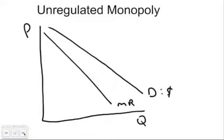In a monopoly, you have a downward sloping demand curve, which is the same as the price, and you have the marginal revenue curve below it. In perfect competition, we had Mr. DARP, so marginal revenue was the demand curve. But in monopoly, the demand curve is downward sloping and the marginal revenue curve lies below that, since we are the only producer of this good and can charge a higher price.